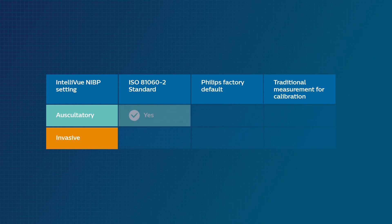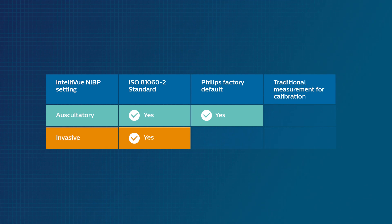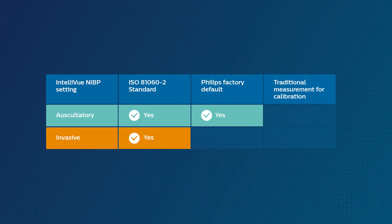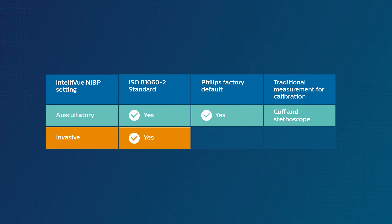Both algorithms conform to the ISO 81060-2 standard and correspond to a traditional method of measuring blood pressure. The auscultatory setting is the factory default for Intelliview monitors and provides NIBP values that approximate to manual cuff and stethoscope readings. The invasive setting provides NIBP values that approximate to values measured using the intra-arterial method.